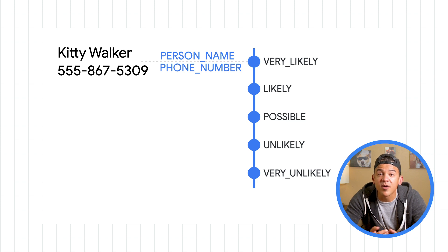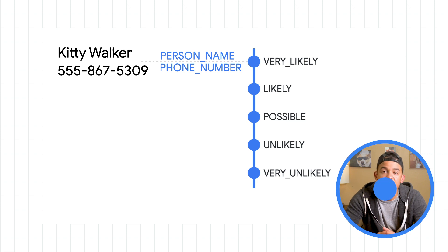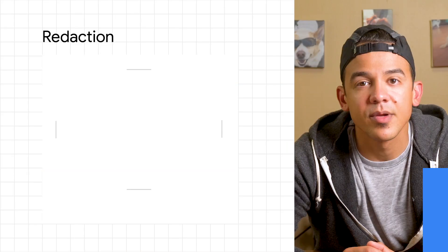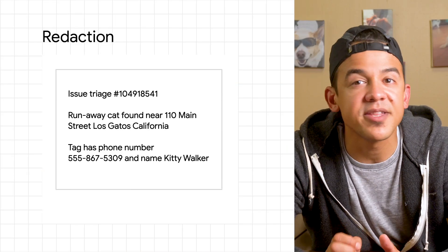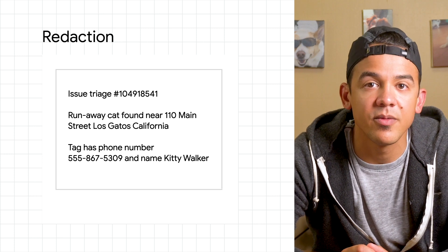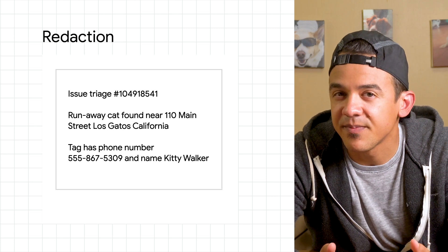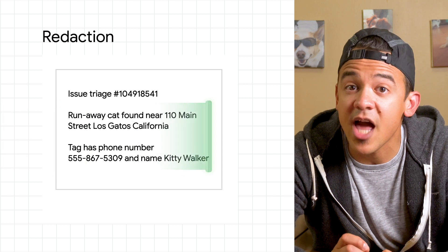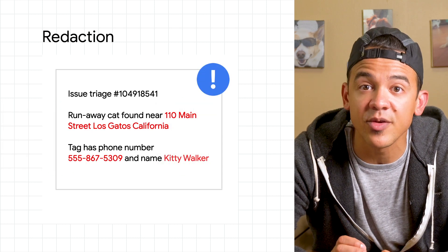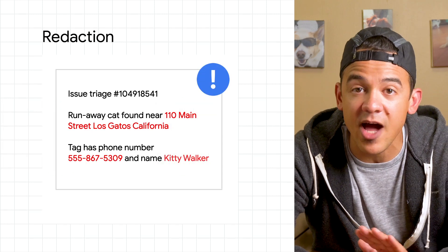DLP's use of context makes it especially effective for conversational text and transcripts. Once data is inspected and classified by infotype and likelihood, DLP can then apply de-identification. So let's talk about one of the most basic forms of de-identification: redaction. When working with text, redaction completely removes the sensitive values from your data without a trace.